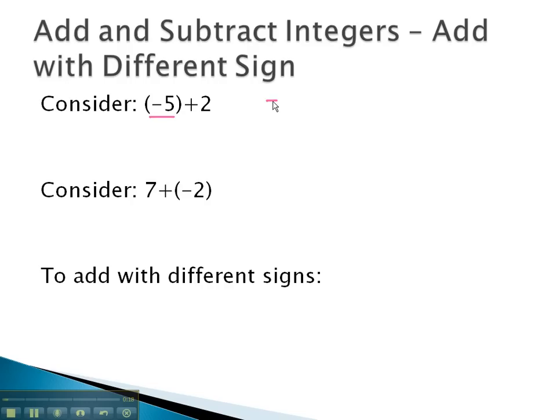This negative five means we have five little negatives hanging out here: one, two, three, four, five negatives. And plus two means we're going to bring in two positives, one, two.